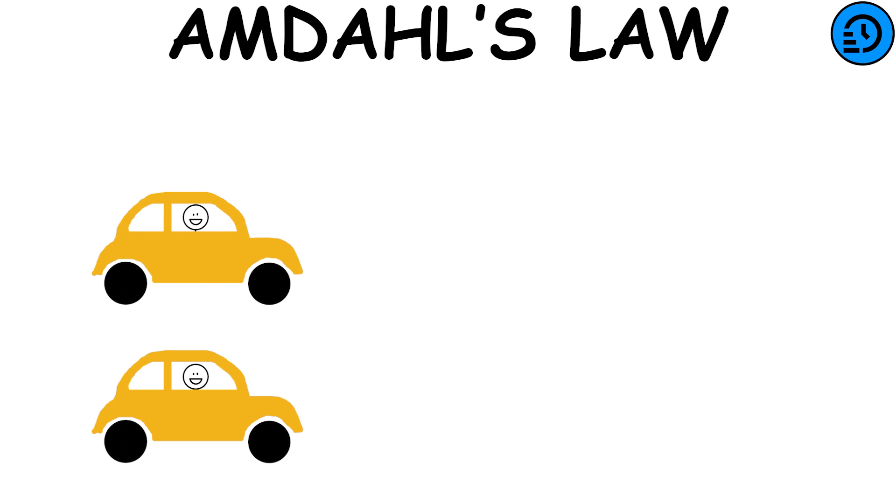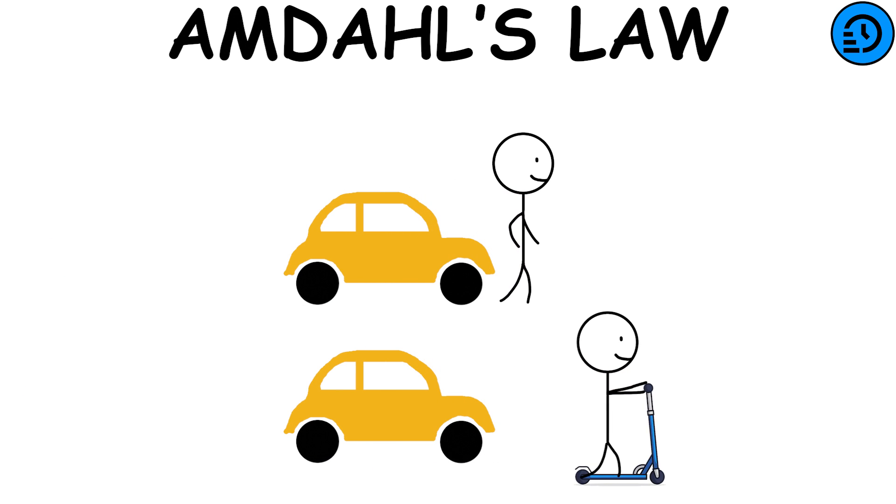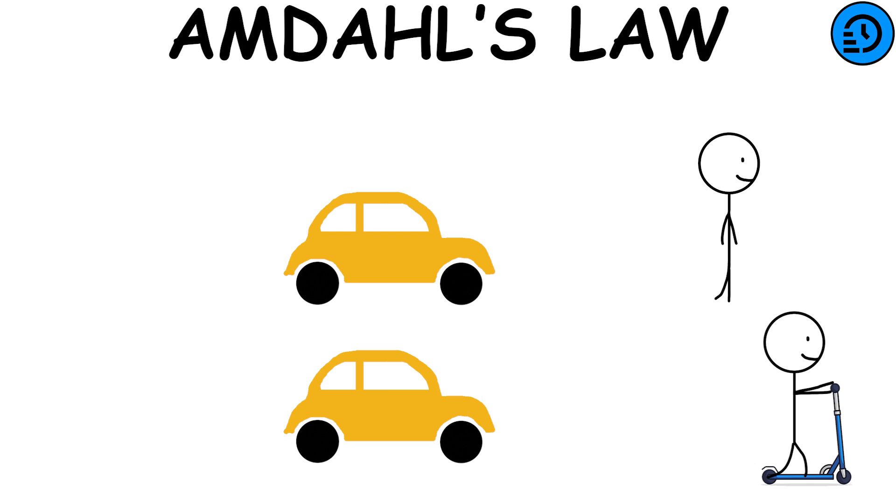Amdahl's Law is a formula that explains how much faster a task can become when you improve the resources of a system.